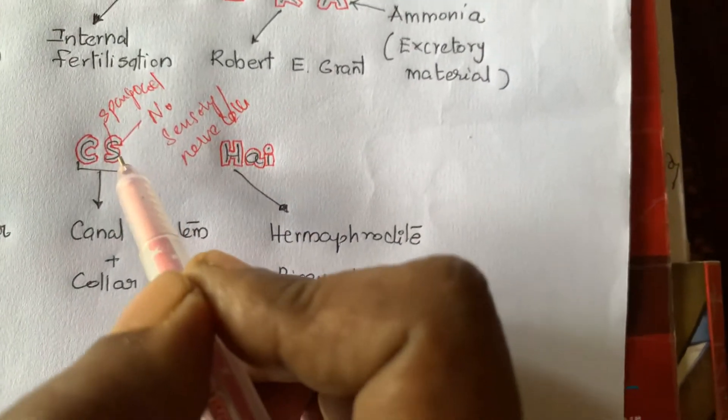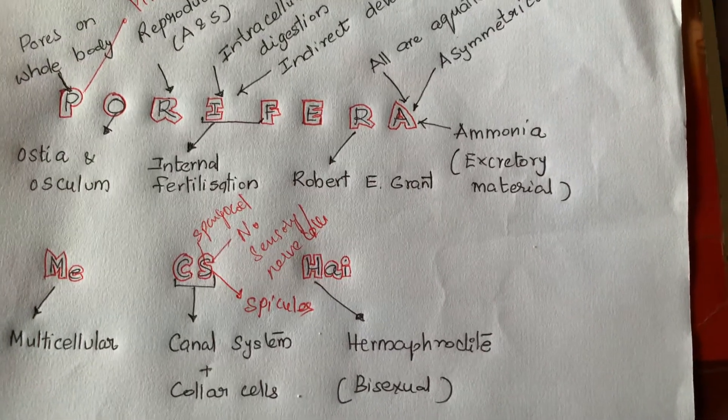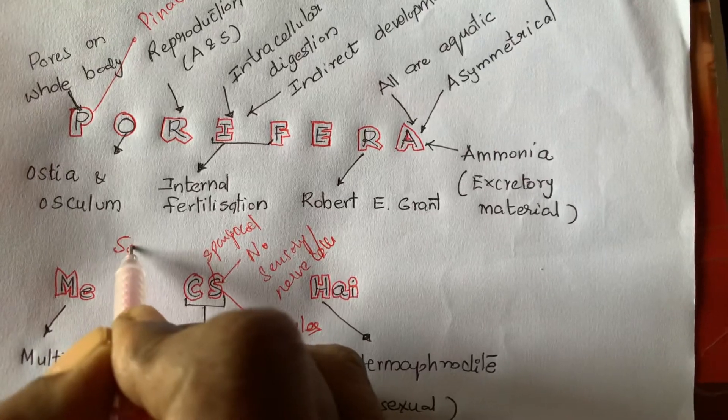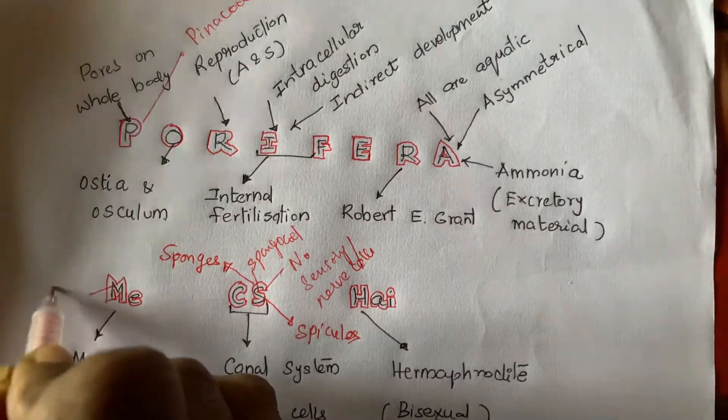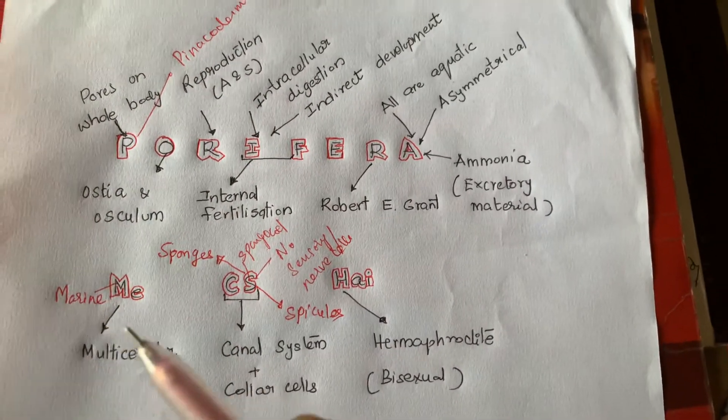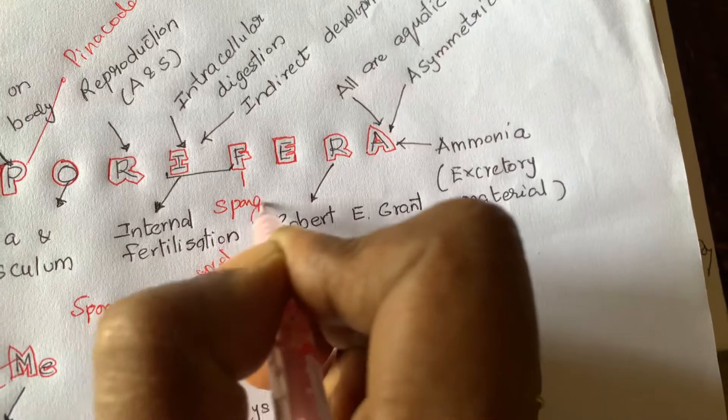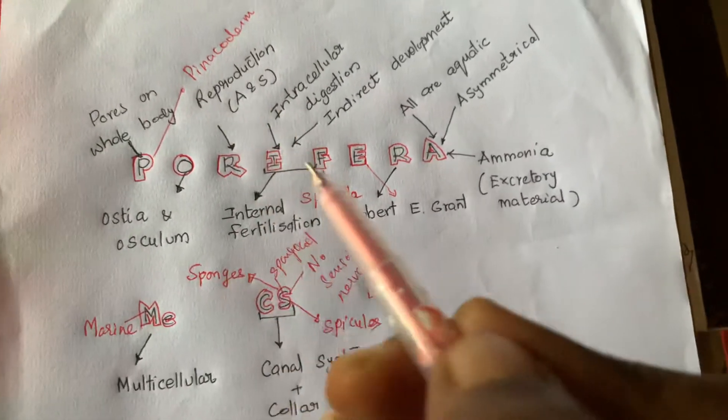So not only pinacoderm, choanoderm, in between them mesenchyme is present where you will see the supporting structures called spicules. These are all the general characters of poriferans which are commonly called sponges. They are mostly marine, some are freshwater, that is Spongilla, and Robert E. Grant coined the term Porifera.